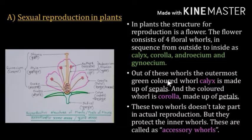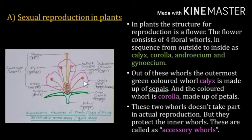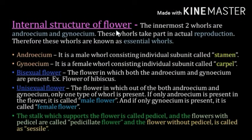The outermost green whorl, the calyx, is made up of sepals, and the colored whorl, the corolla, is made up of petals. These two outermost whorls do not take part in actual reproduction but they protect the inner whorls and the internal structure of the flower. The innermost two whorls are the androecium and gynoecium, which take part in actual reproduction and are therefore called essential whorls.